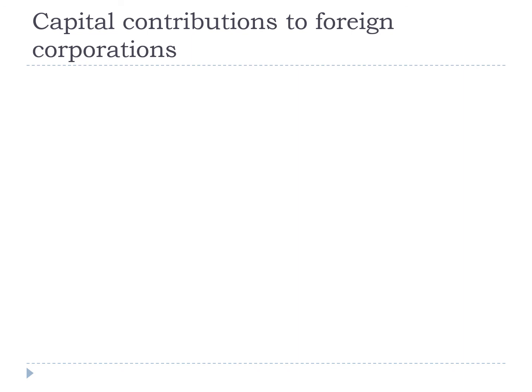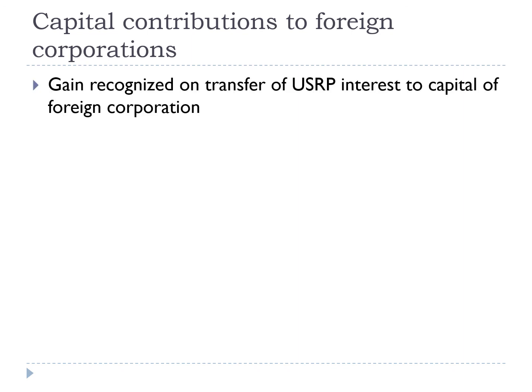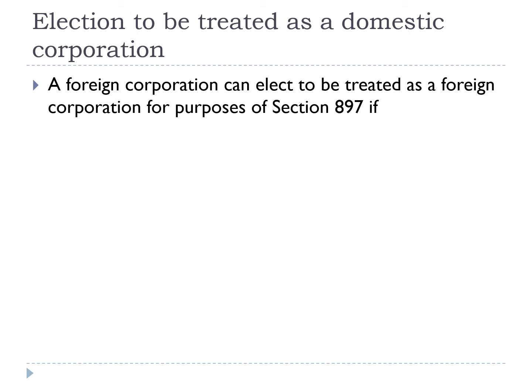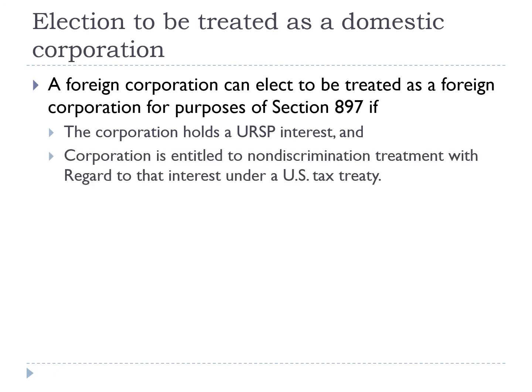In general, a contribution of a U.S. real property interest to the capital of a foreign corporation is a taxable disposition under Section 897. Gain is recognized by a foreign person under Section 897 on the transfer of a U.S. real property interest to a foreign corporation if the property is transferred to the capital of the corporation. A foreign corporation can elect to be treated as a domestic corporation if it holds a U.S. real property interest. Alternatively, a foreign corporation can elect to be treated as a domestic corporation for purposes of Section 897 if the corporation holds a U.S. real property interest and is entitled to non-discrimination treatment with regard to that interest under a U.S. tax treaty.